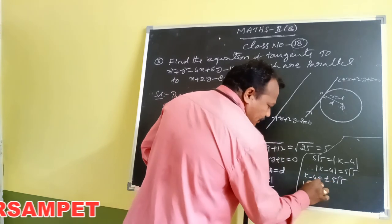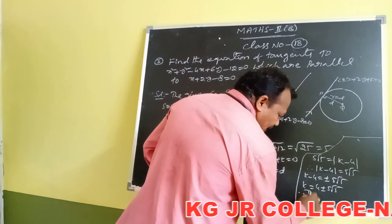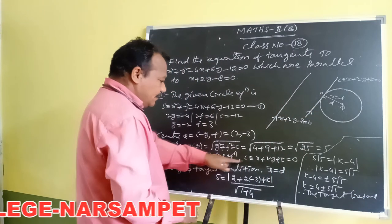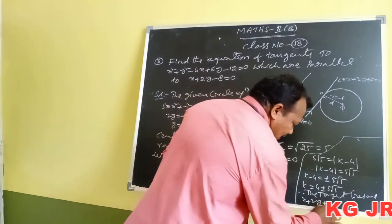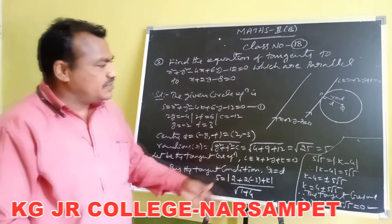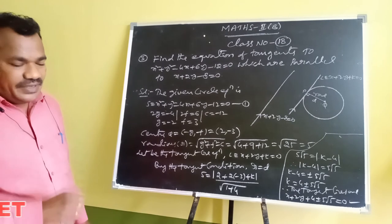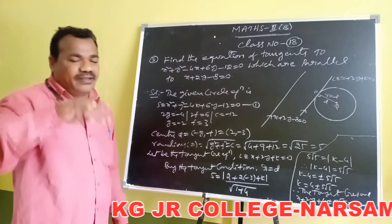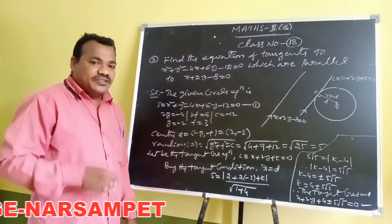Therefore, the required tangent line equations are x + 2y + (4 + 5√5) = 0 and x + 2y + (4 - 5√5) = 0, which are parallel to the line x + 2y - 8 = 0. This method involves writing the tangent in the form x + 2y + k and finding k using the tangent condition R = D. There is also another direct formula method using the center and radius with the line equation.